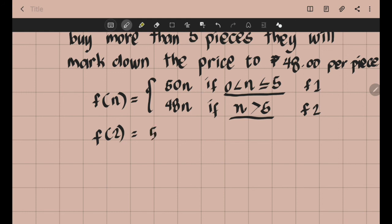We will use the first formula which is 50 multiplied by N. So we have 50 multiplied by 2. F of 2 is 100. Since you're only buying two chocolate bars, you will pay 100 pesos.